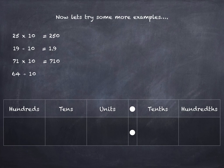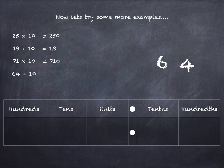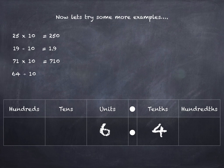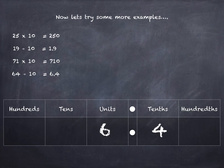What about 64 divided by 10? Let's pop the 64 into the tens and units. We're going to move those digits one place each to the right. 64 divided by 10 is 6.4.